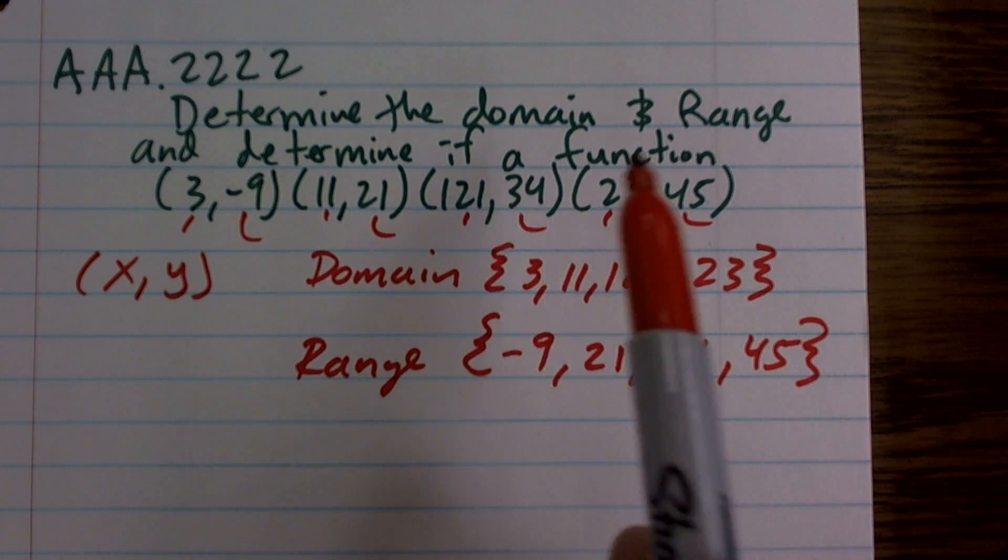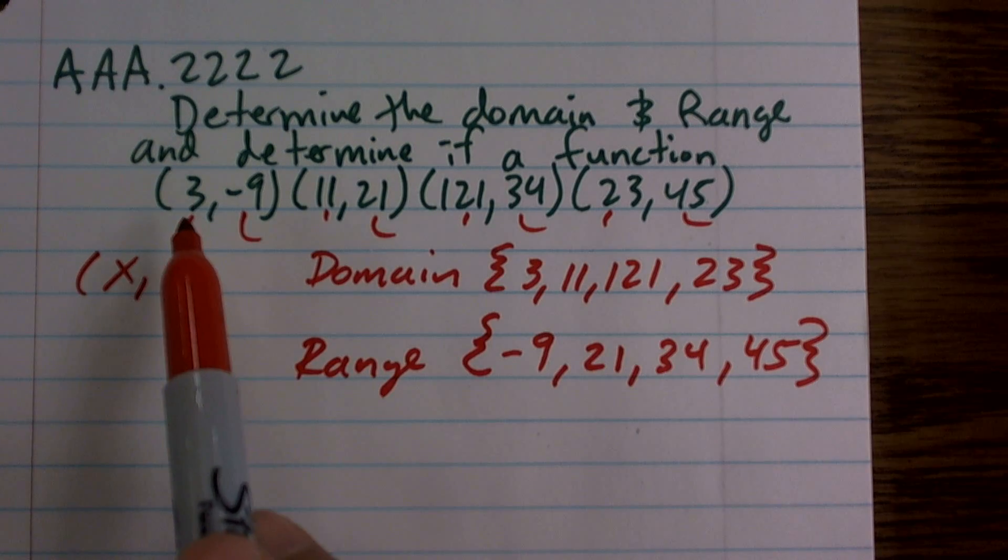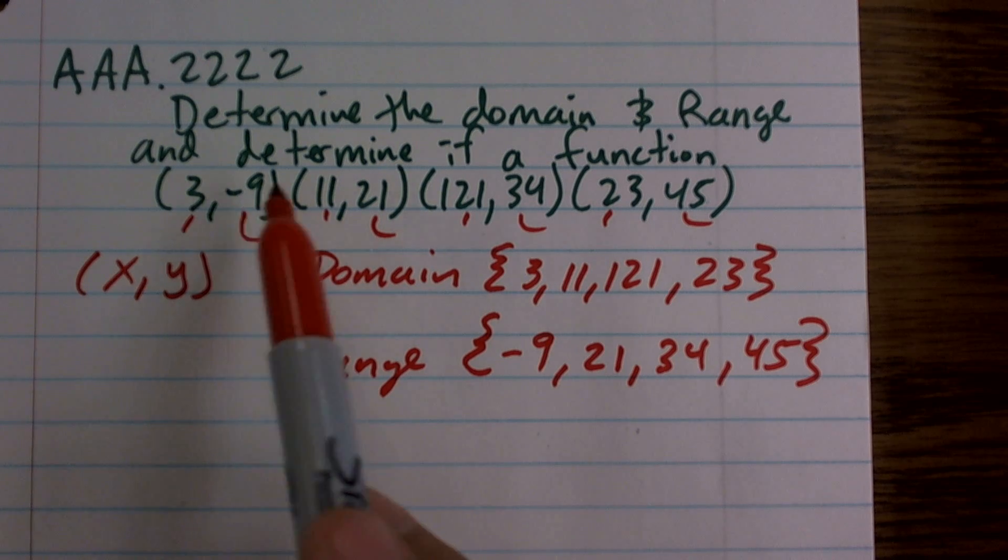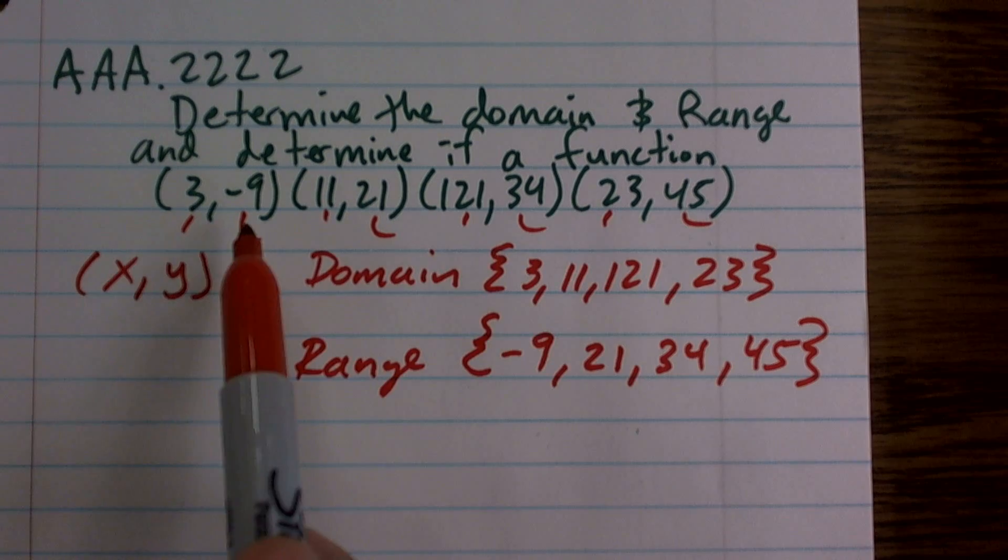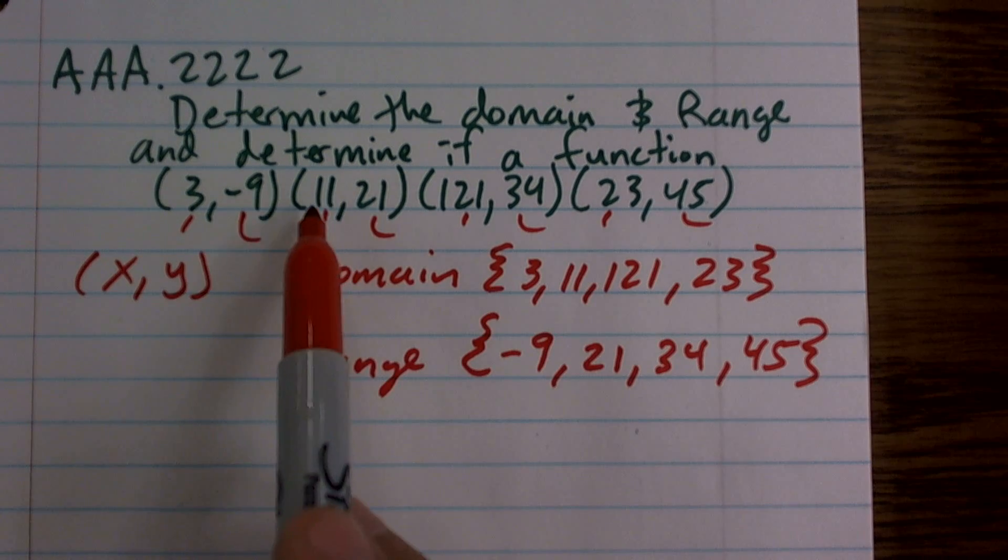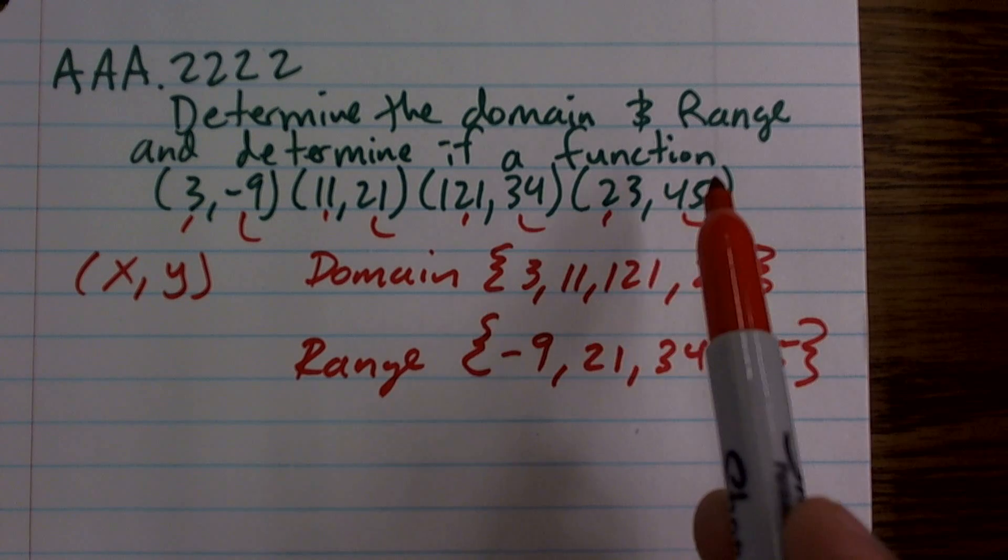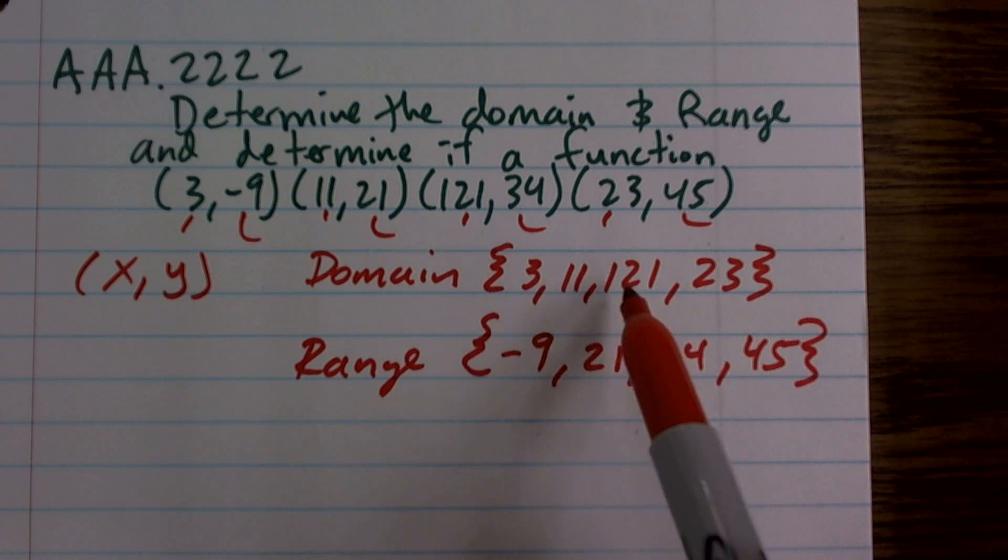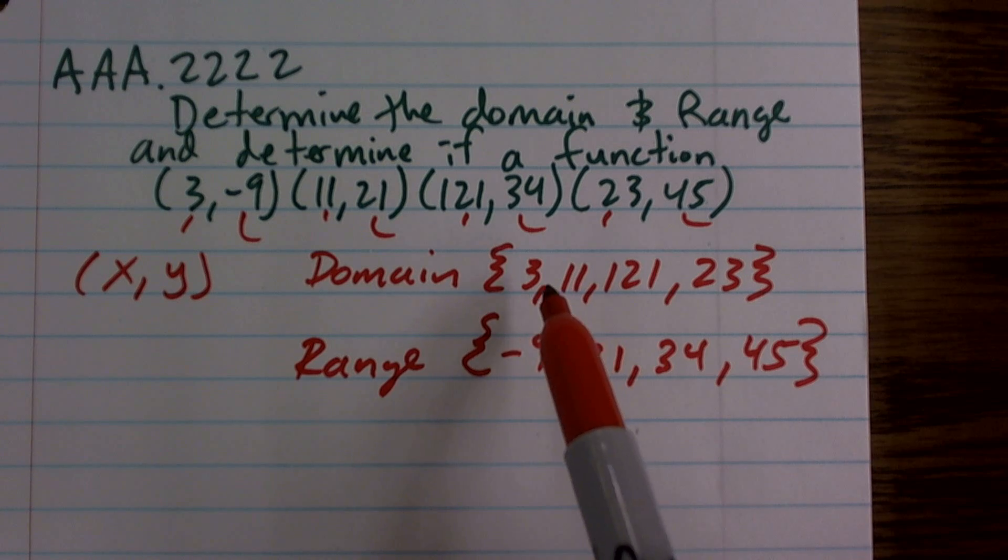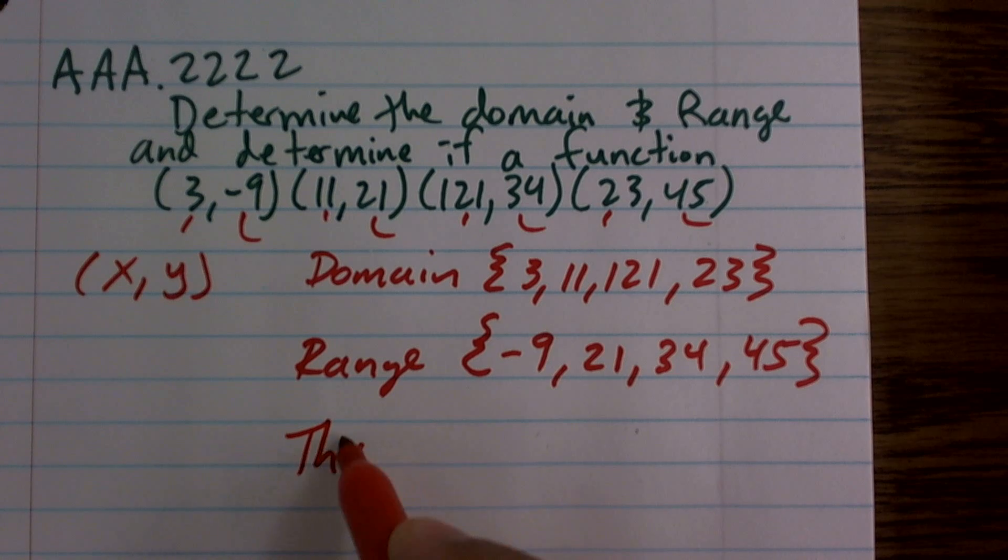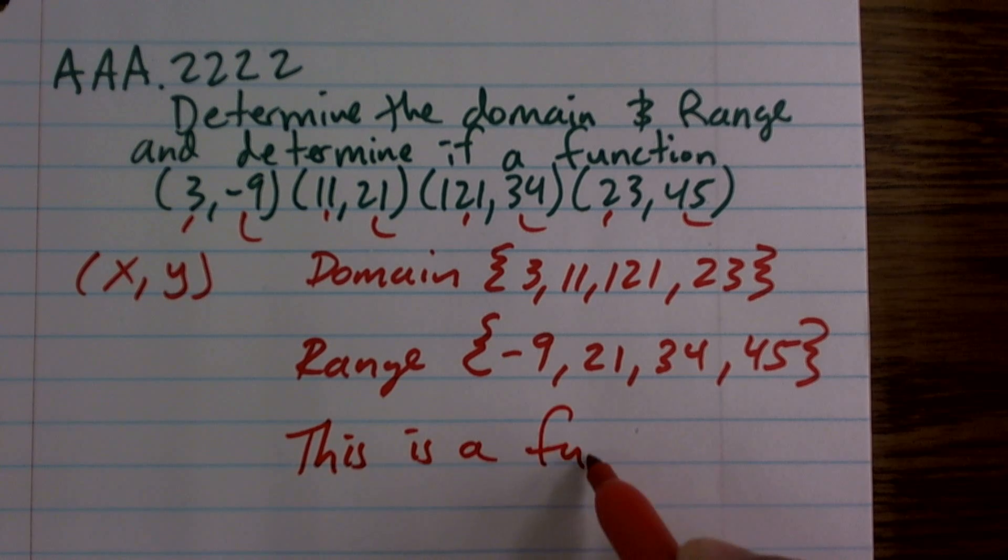But are those unique elements that they map, do they only map to one? So three, yes, only nine. And that's the only time three maps to another number in this relation. 11 maps to 21, 121 maps to 34, and 23 maps to 45. So there's no redundancy of the domain, of two different domains mapping to the same input. So therefore, this is a function.